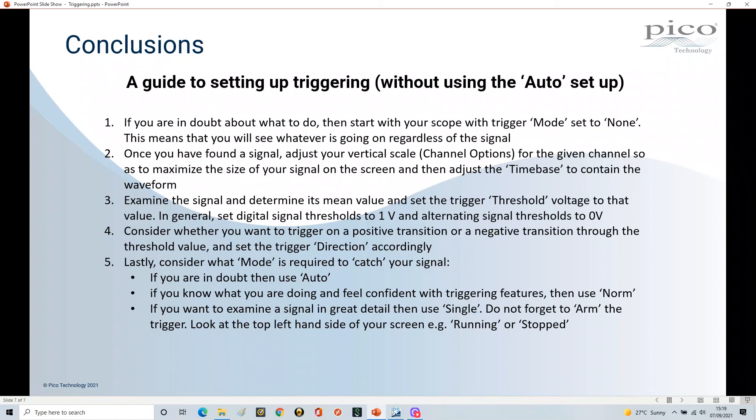However, sometimes if you've got multiple signals coming out and you just want to catch one part of that, then single shot is by far the best way to do it. And don't forget to arm the trigger, because once it's taken a shot it won't rearm itself - you have to rearm it. So look at the top left hand side of your screen, the running or stopped situation. If it says stopped then press again to get it running to catch another signal, because otherwise you think it's not working properly but in fact it is just waiting for you to arm the trigger mechanism.